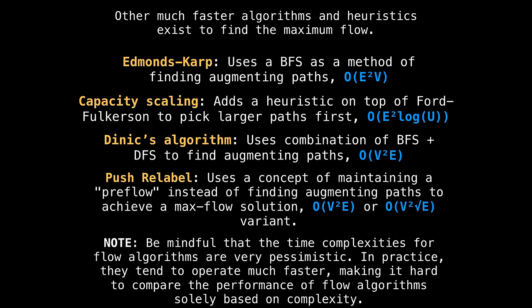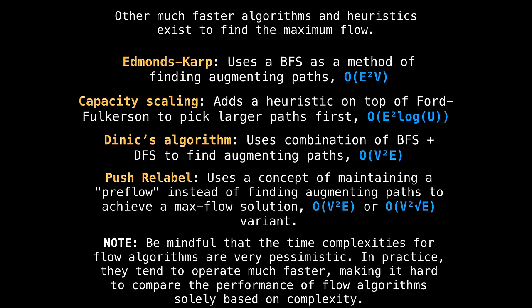There's also this idea of push relabel algorithms, which work differently than the algorithms we've discussed here, which try and find augmenting paths. Instead, push relabel algorithms maintain this concept of a preflow to find the maximum flow of a network. Please be mindful that the time complexities posted here are very pessimistic. In practice, running maximum flow with any of these operates much faster. So it's very hard to compare the performance of two flow algorithms solely based on the complexity.